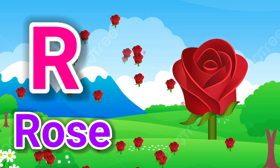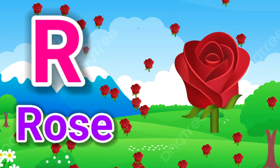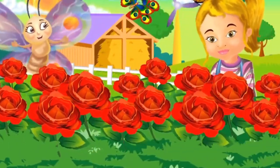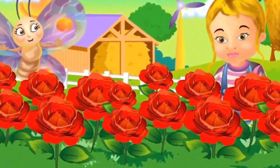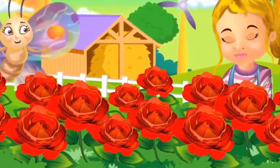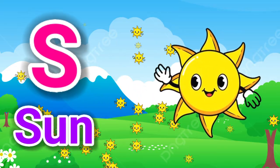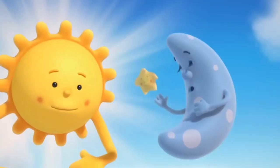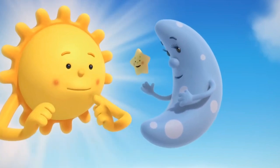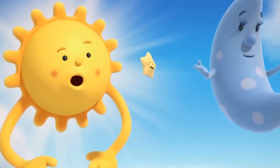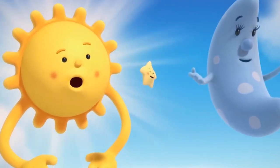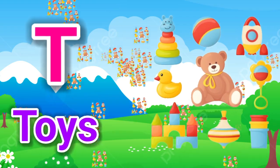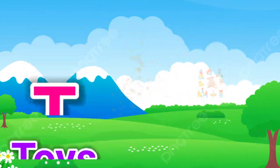R is for Rose. S is for Sun. No dear, your wonderful sunset. Come on little star. T is for Toys.